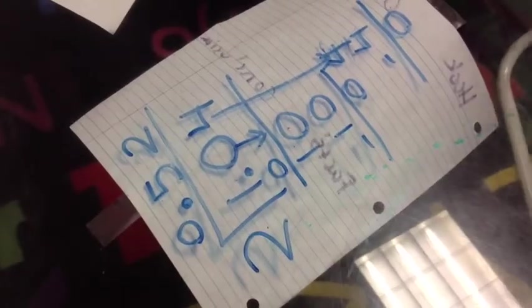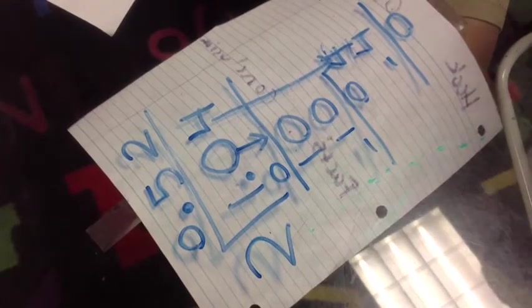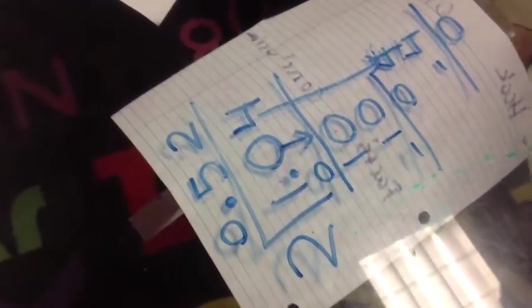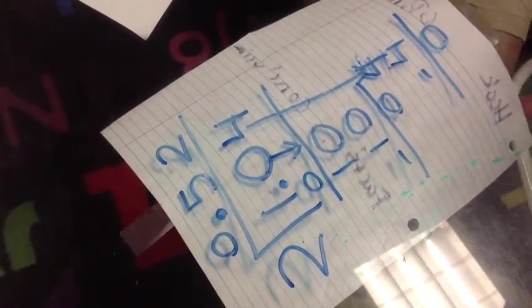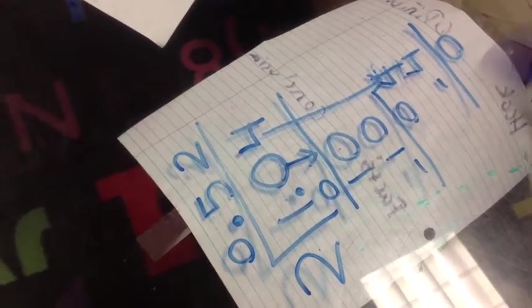We divided 2 by 1.04 hundredths. Why? Okay. Where did you get 1.04 hundredths from? By subtracting 2.57 hundredths and 3.60 hundredths. Okay, thank you.